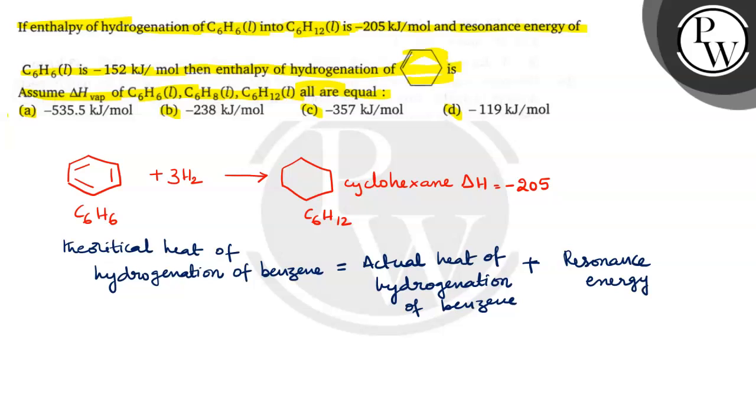If you assume, actually this is having cyclohexene with one double bond, then it is called cyclohexene. So for one double bond, how much energy is required we are going to calculate. In benzene, there are three double bonds. So theoretically, we are assuming benzene as cyclohexatriene. Then what is its theoretical hydrogenation? Actual heat of hydrogenation is minus 205. This is actual hydrogenation. Plus, what is the resonance energy? Resonance energy is minus 152, which gives minus 357 kilojoules.